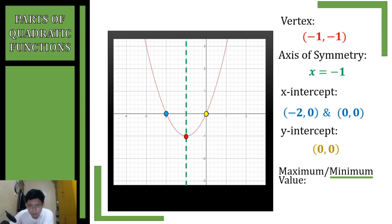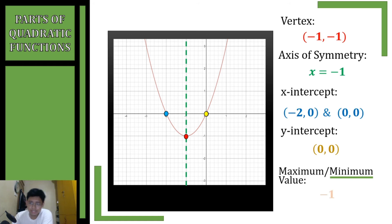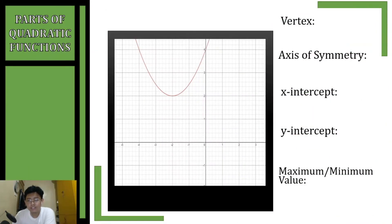For the maximum or minimum value, we get the minimum value because the vertex is at the bottom of our parabola. The minimum value is the y-coordinate of our vertex, which is negative 1.